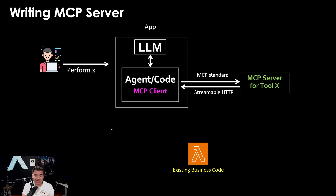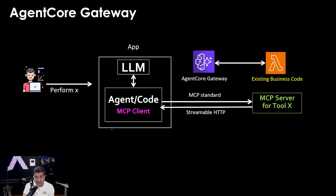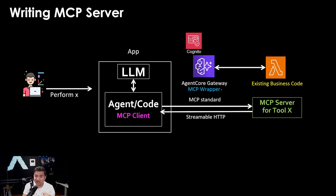This is what Agent Core Gateway solves. With Agent Core Gateway, you can take your existing business code and you do not need to enhance it to implement all the MCP standards — your code doesn't need to be changed. Agent Core Gateway creates the MCP wrapper for you. And because you are not changing the existing business code, you can keep using it with other APIs. Agent Core Gateway comes out of the box with authentication, authorization, logging, and tracing.